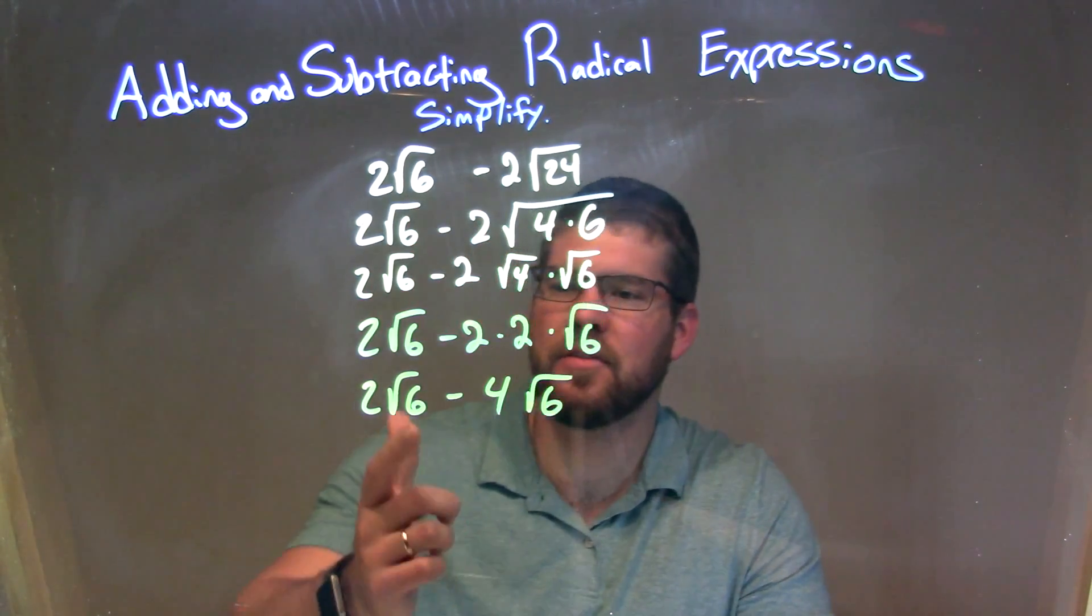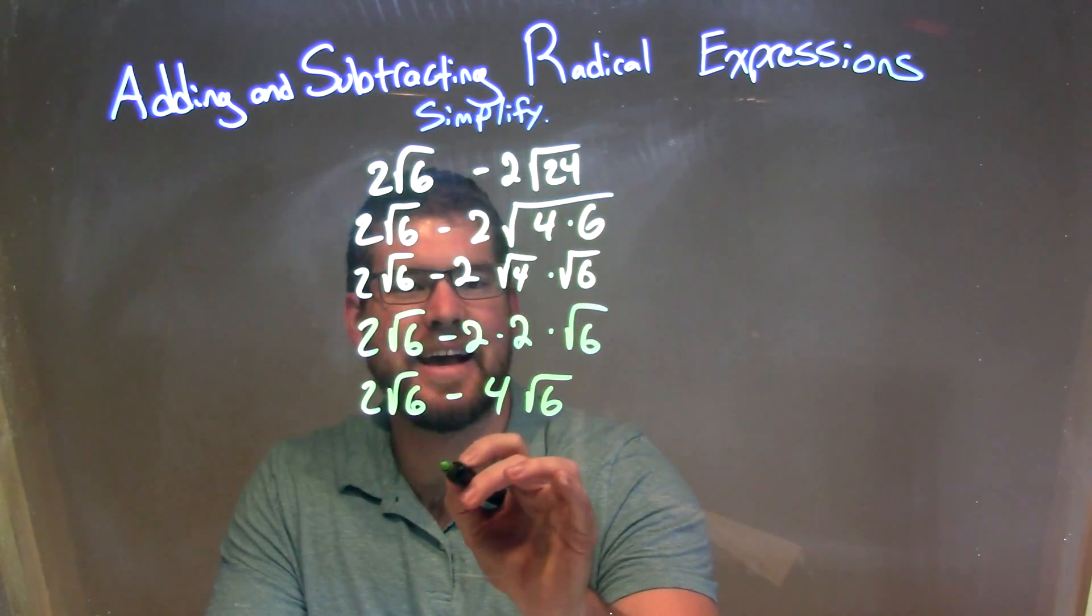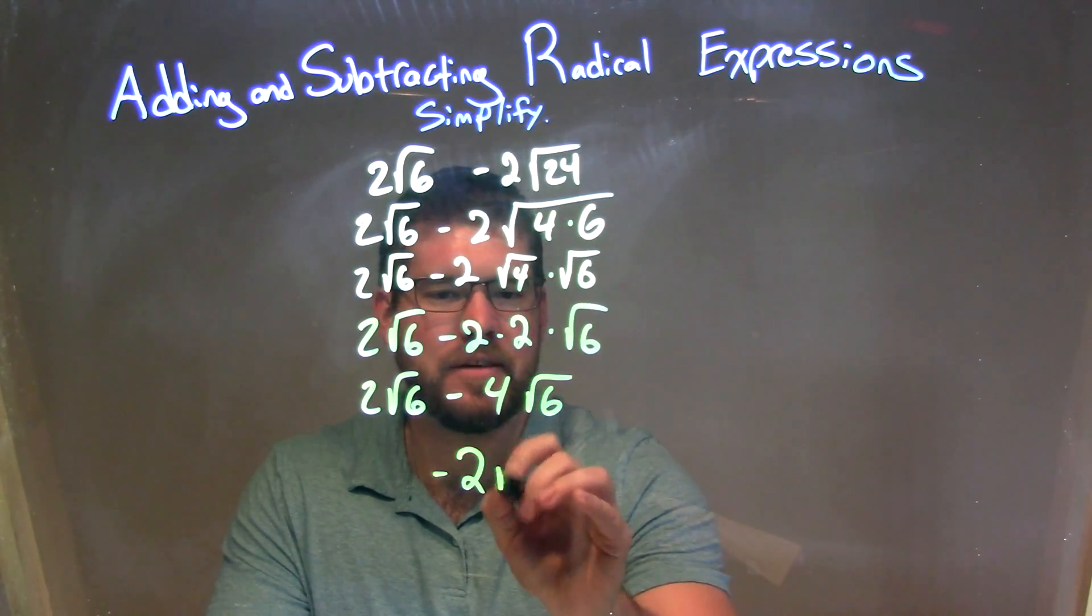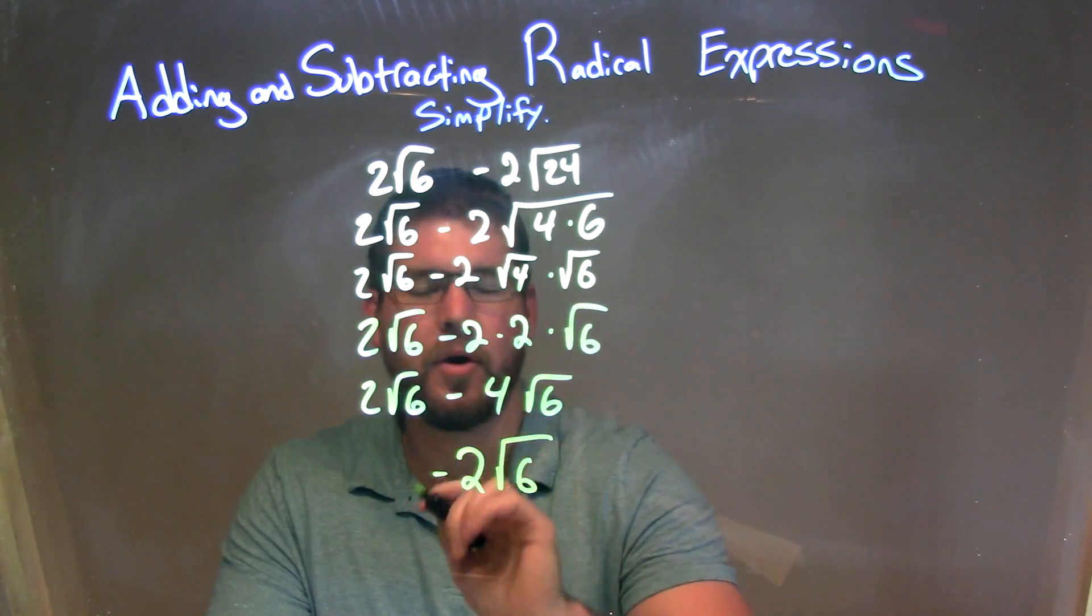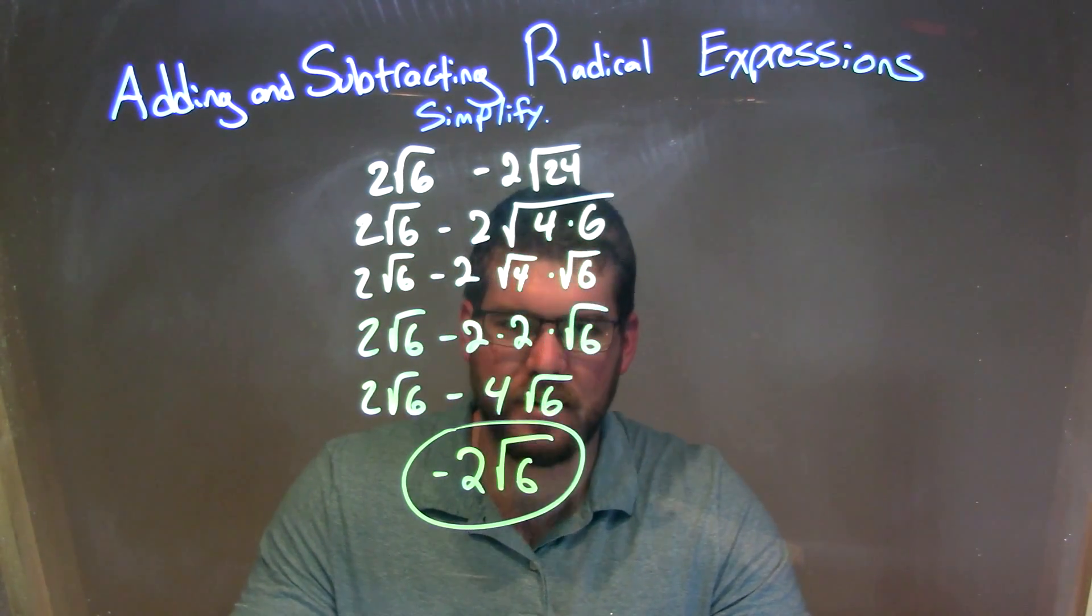And now that we have the same square root, we look to what's in front of the square root. We have 2 minus 4. 2 minus 4 is just negative 2. So we have negative 2 out there, and then we can combine it here and just have the square root of 6 to make it one part. And so our final answer is just negative 2 times the square root of 6.